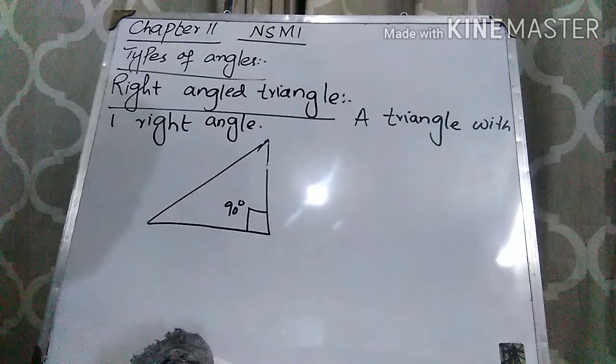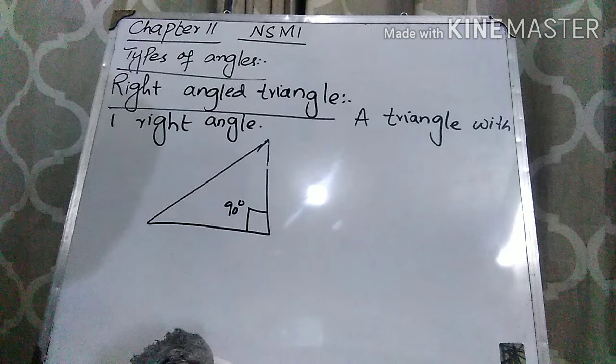A right angle triangle is a triangle with one right angle. Whenever you have a triangle in which one angle is 90 degrees, we say that it is a right angle triangle. Remember that a right angle is equal to 90 degrees and is represented by a small square. Whenever in a triangle you have a right angle like this, this is a right angle triangle. If a triangle has one right angle — 90 degrees — it is called a right angle triangle.